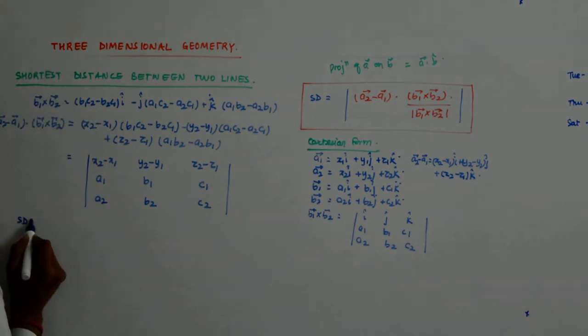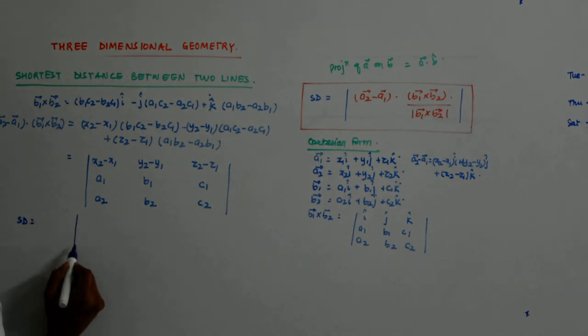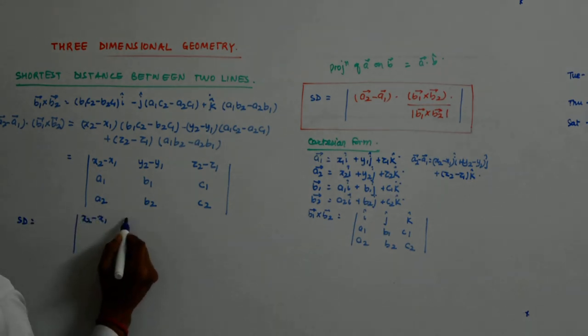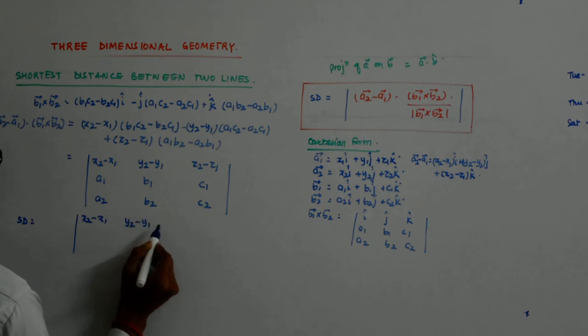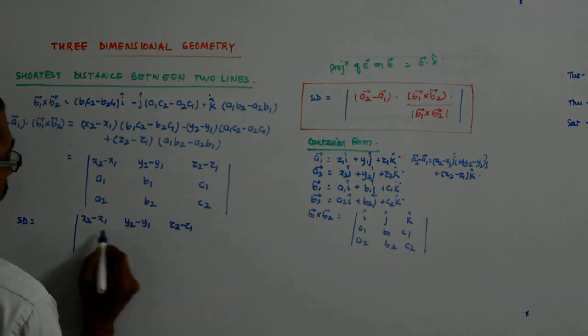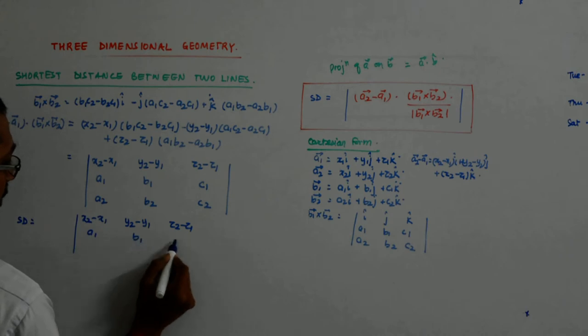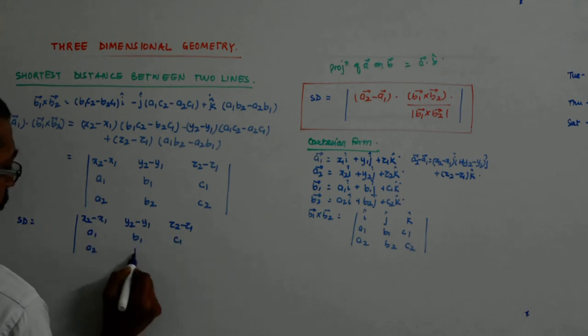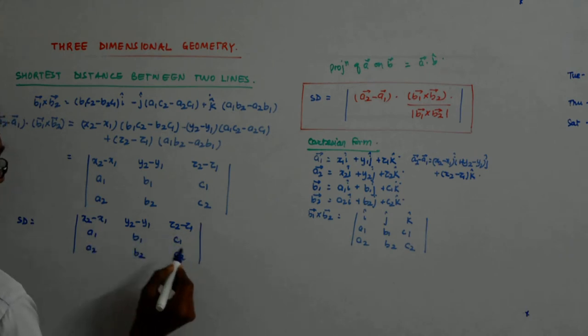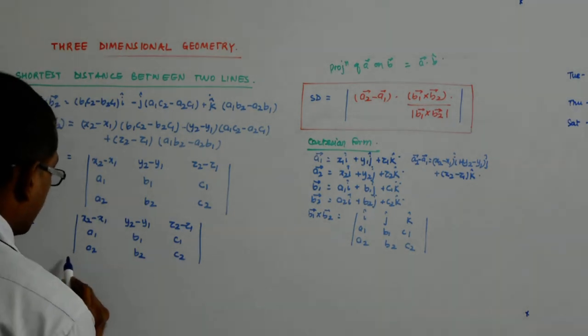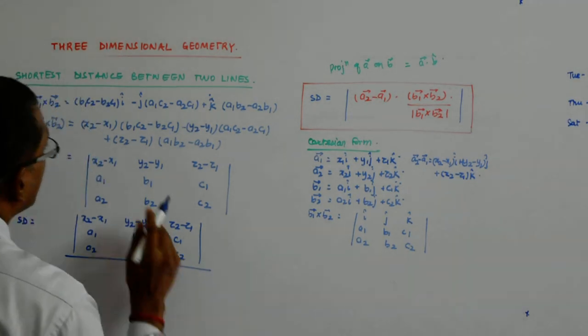So, shortest distance becomes x2 minus x1, y2 minus y1, z2 minus z1, a1, b1, c1, a2, b2, c2 divided by mod of this.